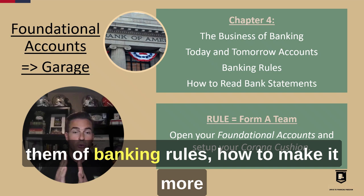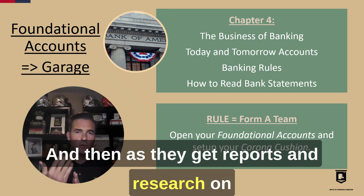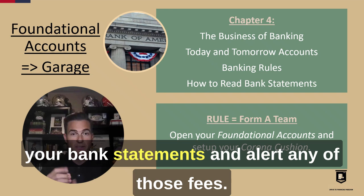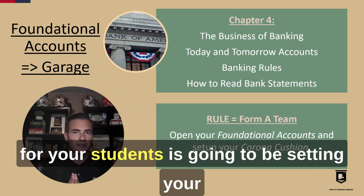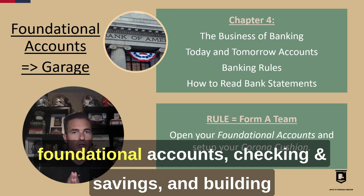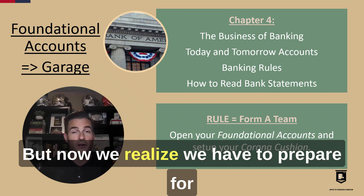As they get reports and research on what they're doing in their program, we cover how to read your bank statements and alert on any fees we can start to remove. The action item here is setting your foundational accounts — checking and savings — and building that Corona cushion, which was formerly known as the emergency fund. Now we realize we have to prepare for all kinds of events, including things like the coronavirus.